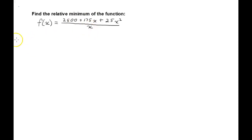Let's first divide everything by x and make this function equal to 2,500 divided by x plus 175 plus 25x. On those second two terms the x's are going to be cancelled out of course.